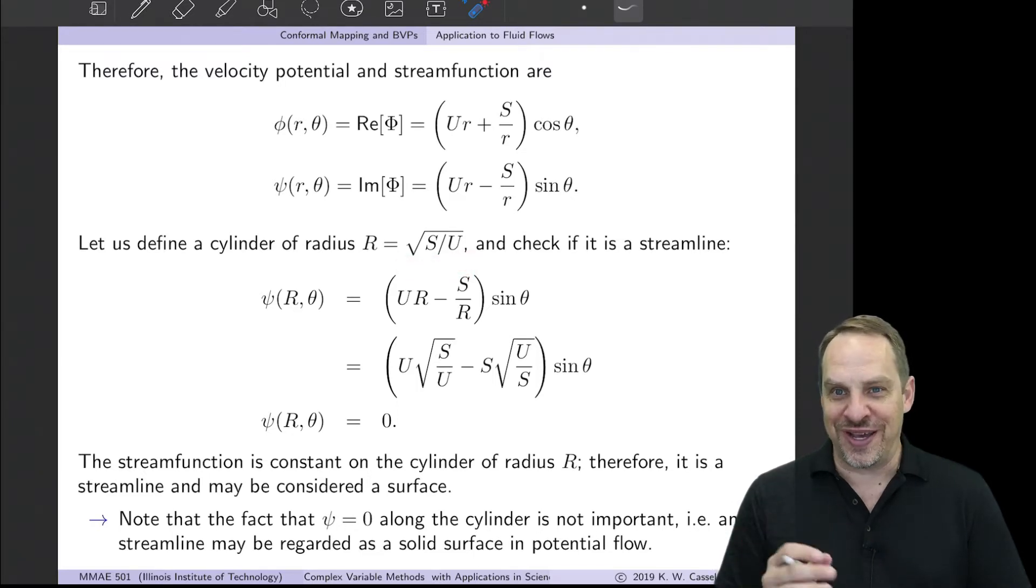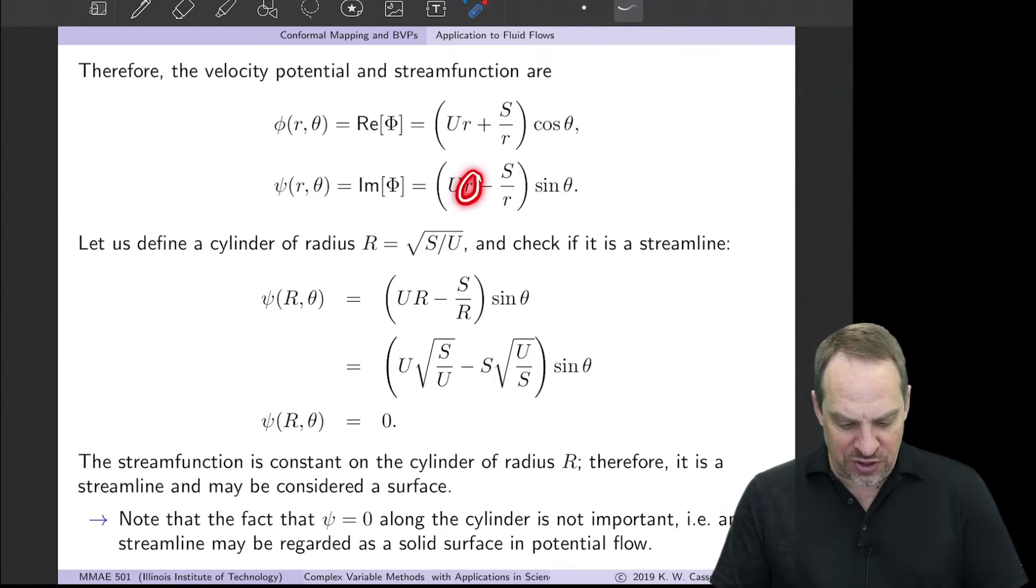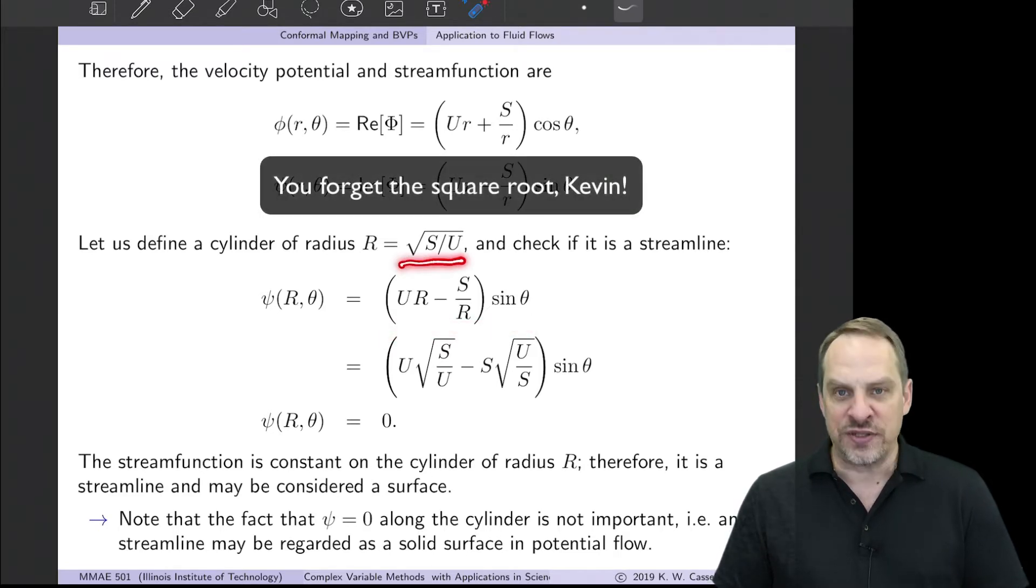Let's say we have a cylinder of radius R that equals √(S/U). You say, well, how do you know that? I kind of peeked at the end of the book. So let's substitute in for little r: capital R. So capital U times R minus S over R, all times sin θ. But then let's substitute for R, √(S/U). Remember, S is the strength of the doublet, U is the uniform flow.